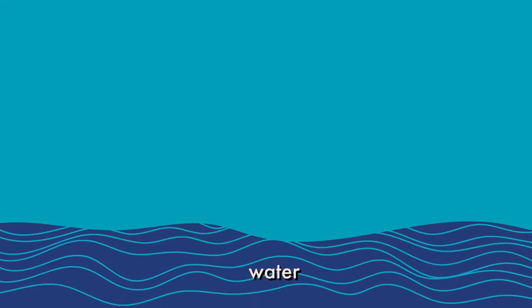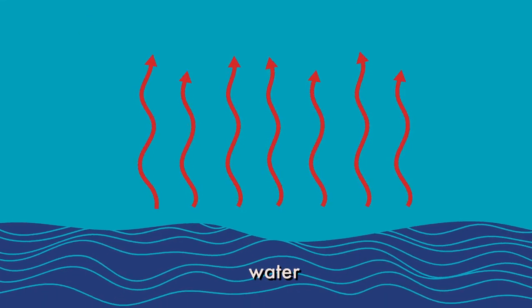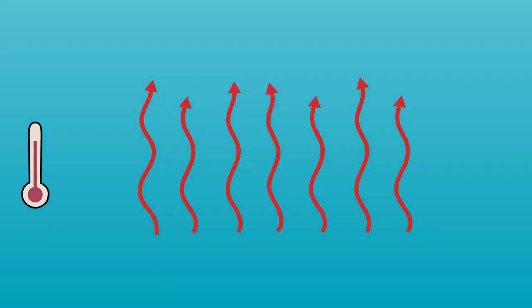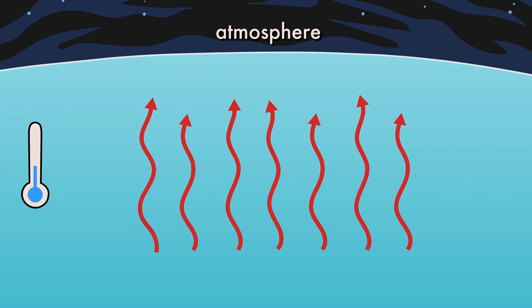Clouds form when water from oceans, lakes, and rivers evaporates, becoming water vapor. Warm air containing water vapor rises. If it rises high in the atmosphere, the air cools down and some of the water vapor condenses into liquid water.